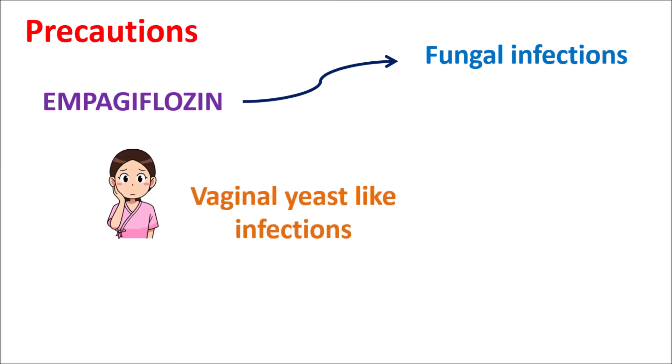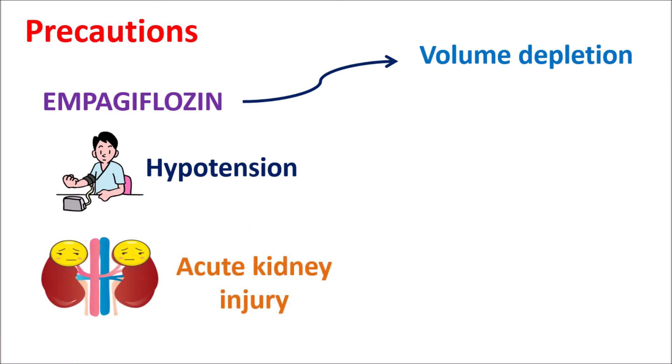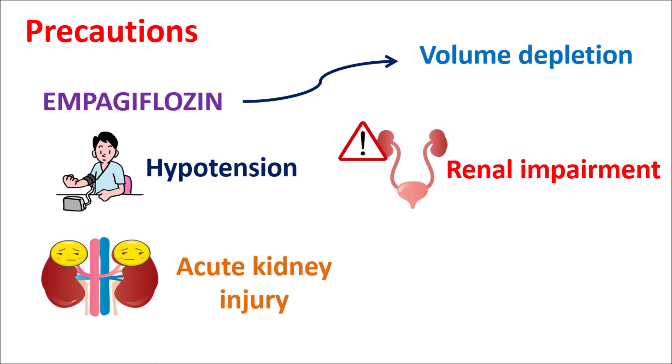A second important precaution is that empagliflozin can produce fungal infections — vaginal yeast-like infections in women and genital infections in men. Another precaution is volume depletion: empagliflozin increases excretion of glucose, sodium, and water to reduce body volume, which reduces cardiac work and increases cardiac efficiency. However, excessive volume depletion can lead to hypotension and acute kidney injury. Volume depletion should be thoroughly monitored, and caution should be taken in people with renal impairment or when combined with loop diuretics, which are high-ceiling diuretics producing significant volume depletion.